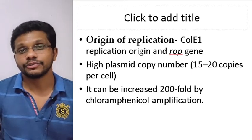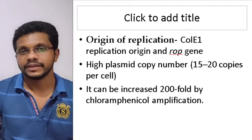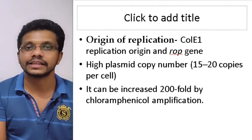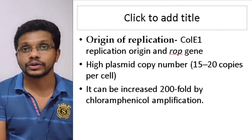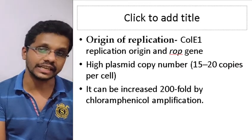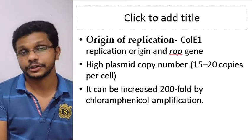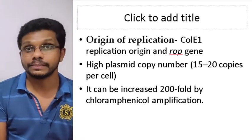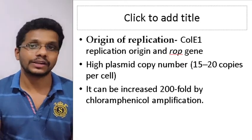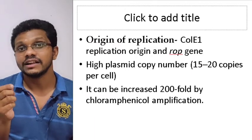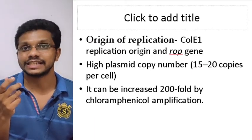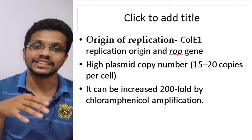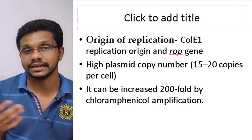The origin of replication is derived from ColE1 plasmid and it is a high copy number plasmid. It usually has 15 to 20 copies of the plasmid in the cell. We can increase the copy number by adding chloramphenicol. Chloramphenicol affects protein synthesis in the cell — if it prevents protein synthesis, it will prevent replication of the genomic DNA, but the plasmid DNA continues to replicate. That's what we call chloramphenicol amplification of the plasmid. The normal copy number of PBR322 is between 15 to 20, but if you add chloramphenicol in very low quantities, it will amplify the plasmid DNA 200-fold — a huge copy number within the cell.